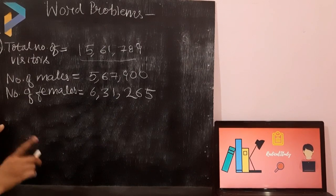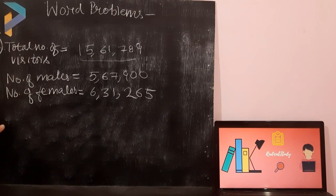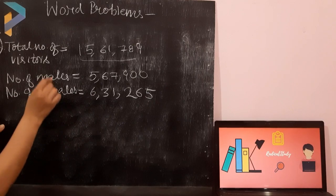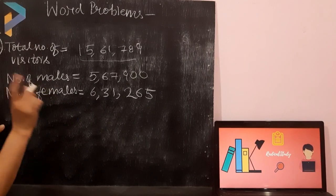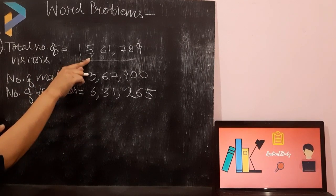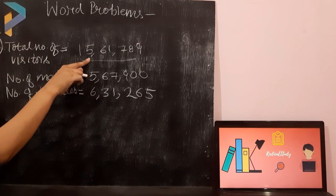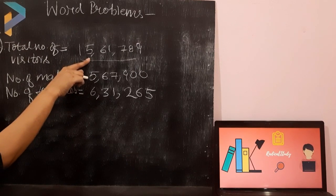You have to find out the number of children. Aapko is question mein, you have to add also and you have to subtract also. Firstly, you will add the number of males and females. Then, you will subtract that from the total number of visitors in order to find out the number of children.